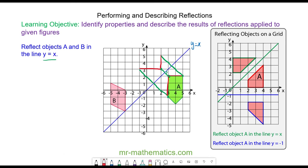We can now recreate the image, and we can check it is right using this vertex: 1, 2, 3 and 1, 2, 3 on the other side. So we have created image A.